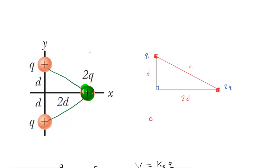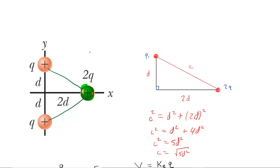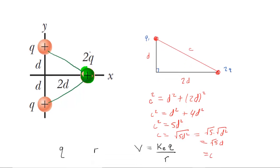From the Pythagorean theorem, C squared equals D squared plus the quantity 2D squared. If we square the 2D we get 4D squared, and 1D squared plus 4D squared is 5D squared. Taking the square root of both sides gives us the square root of 5D squared, which can be split into the square root of 5 times the square root of D squared. Since the square root of D squared is just D, the distance is D radical 5, or equivalently D√5.